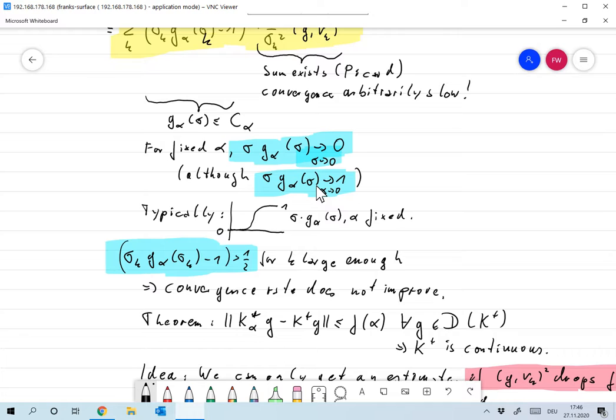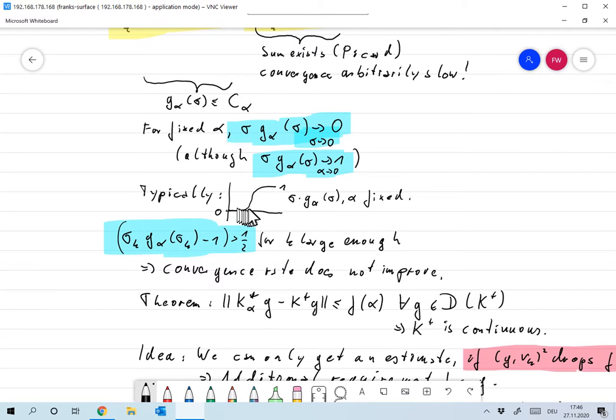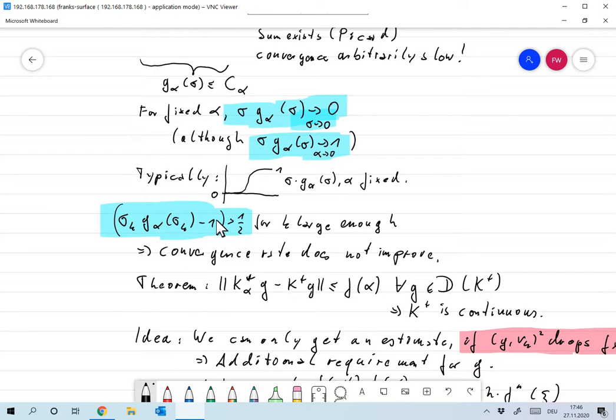So typically, sigma times G alpha of sigma looks something like this here. So it's zero, very close to zero. And the higher it gets, it gets close to one. Okay, as I said, if sigma K is small enough or K is large enough, then sigma K times G alpha of sigma K minus one will be larger than one half, in absolute value, let's take the square here, will be larger than one half. So it doesn't help with the convergence.